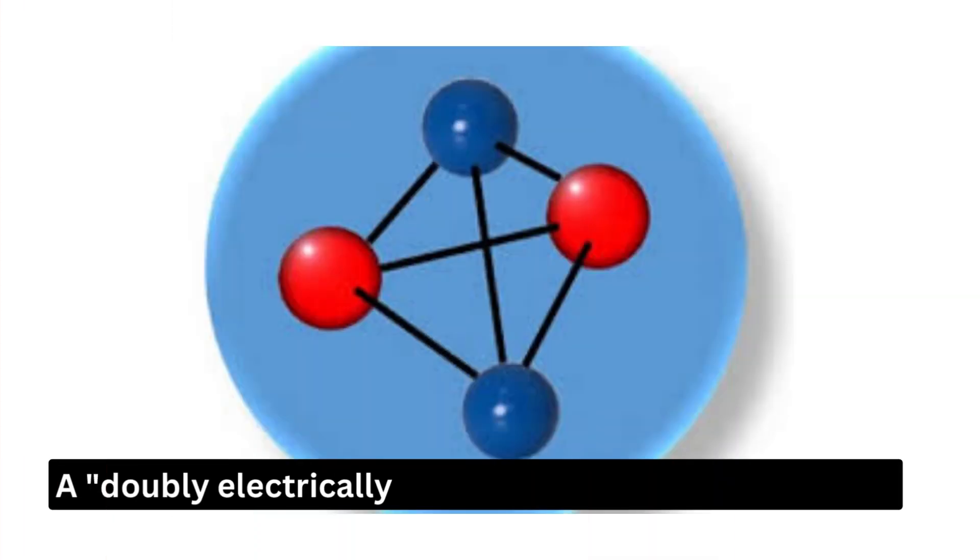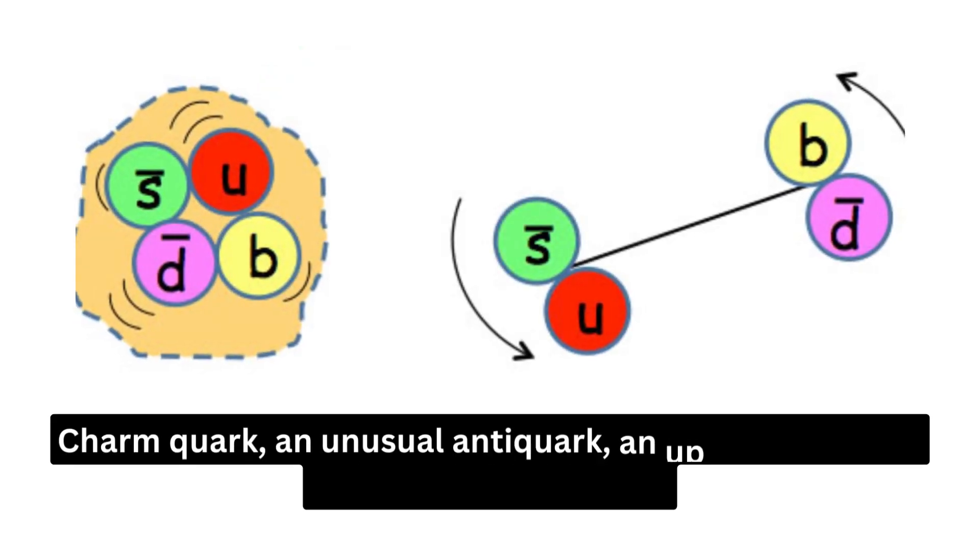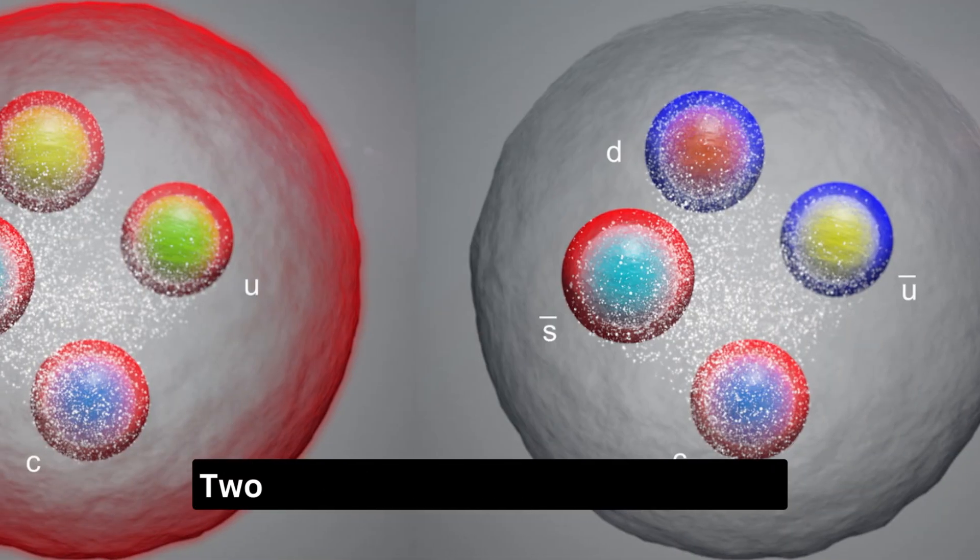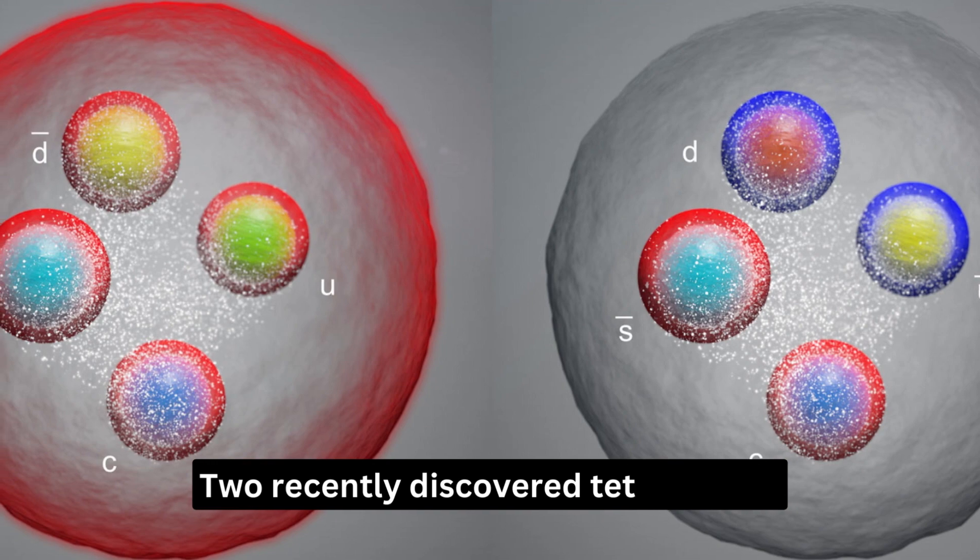A doubly electrically charged mixture of four quarks makes up the two recently discovered tetraquarks: a charm quark, an unusual anti-quark, an up-quark, and an upside-down anti-quark.